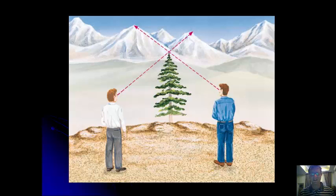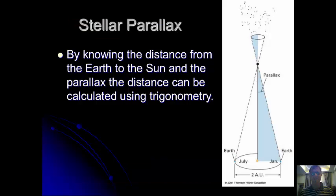So how do we do this with stars? Well, with stars, by knowing the distance from the Earth to the Sun, and the parallax, which is the angle of change dependent on seemingly stationary more distant objects, we can use a bit of trigonometry to find out the distance to that star.